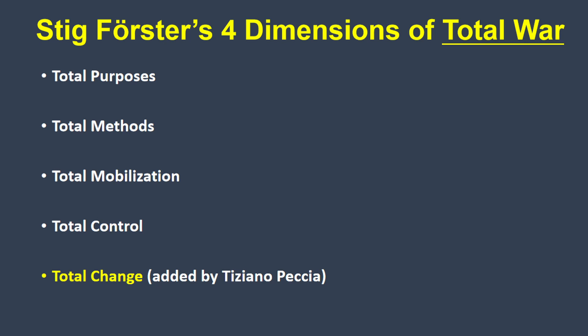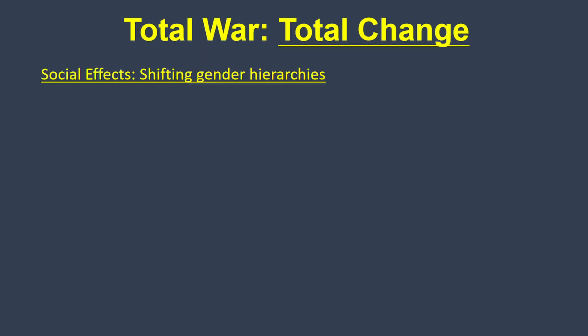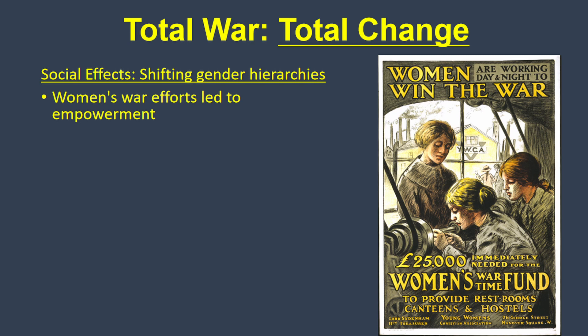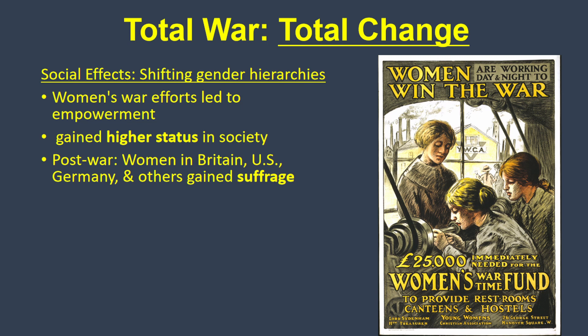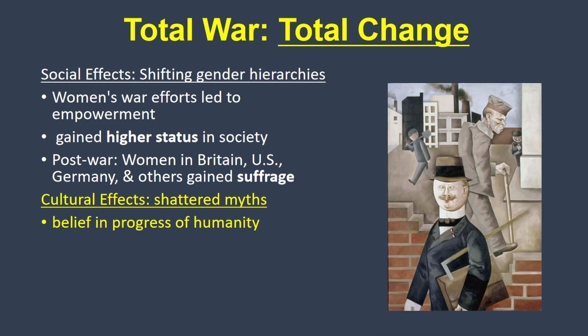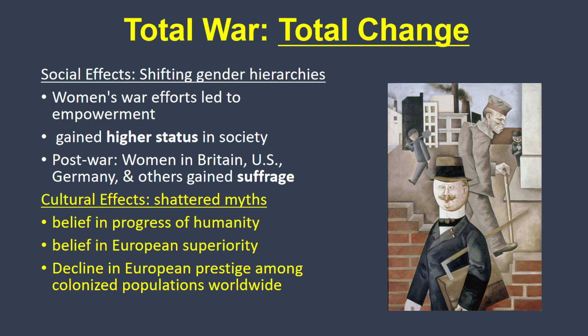Historian Tiziano Peccia added a fifth category: total change, which describes the various transformative effects of the war. Social effects included the transformation of hierarchies, such as gender — since women's contributions to the war made them feel empowered and earned them a greater role in society. In many countries, such as Britain, the United States, Germany, and others, women finally earned the right to vote shortly after the war. Cultural effects included the shattering of the myth of progress and Europeans' belief in the superiority of their own civilization. European prestige among the many colonized peoples of the world also declined substantially.